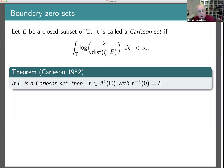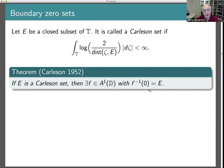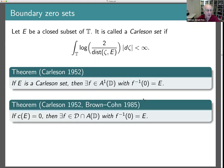What does this have to do with the Dirichlet space? If f is in A^1, then it's certainly in the Dirichlet space, because if f' is bounded then the Dirichlet integral of f converges. So an instant corollary to Carleson's theorem is that if E is a Carleson set on the unit circle, then you can find a function in the Dirichlet space having E as its zero set. Is this a necessary condition too? It was necessary for A^1, but for the Dirichlet space the answer is no.